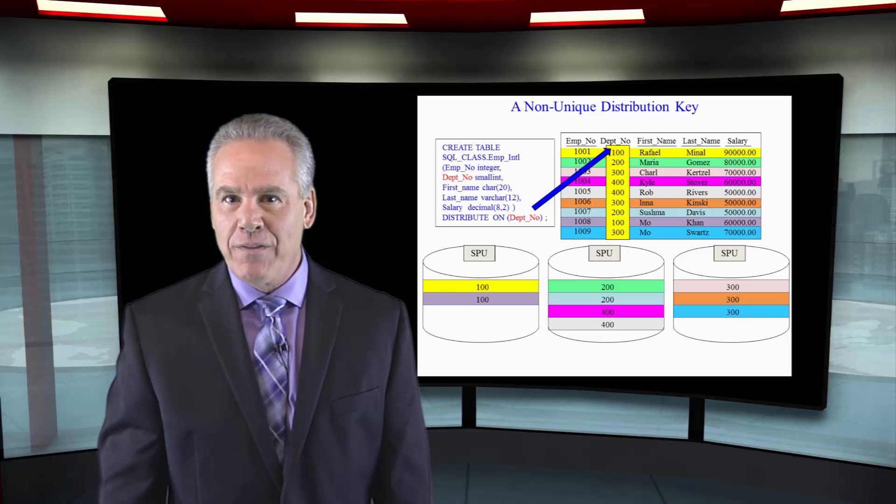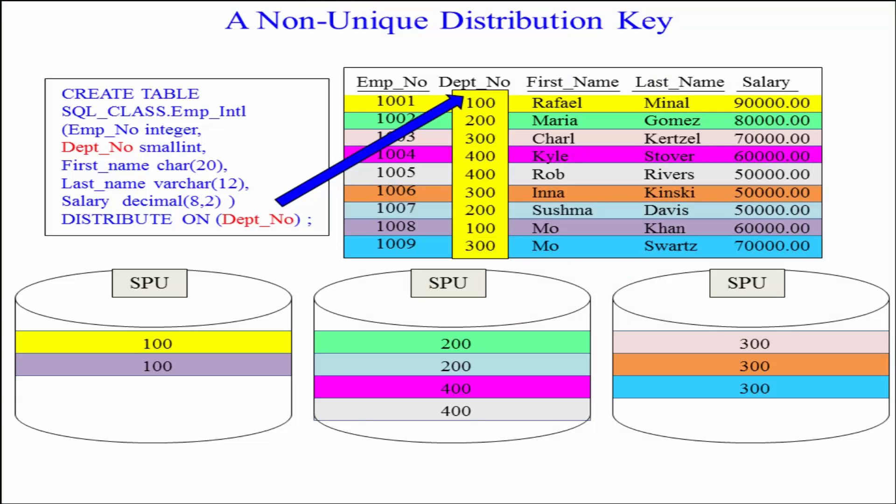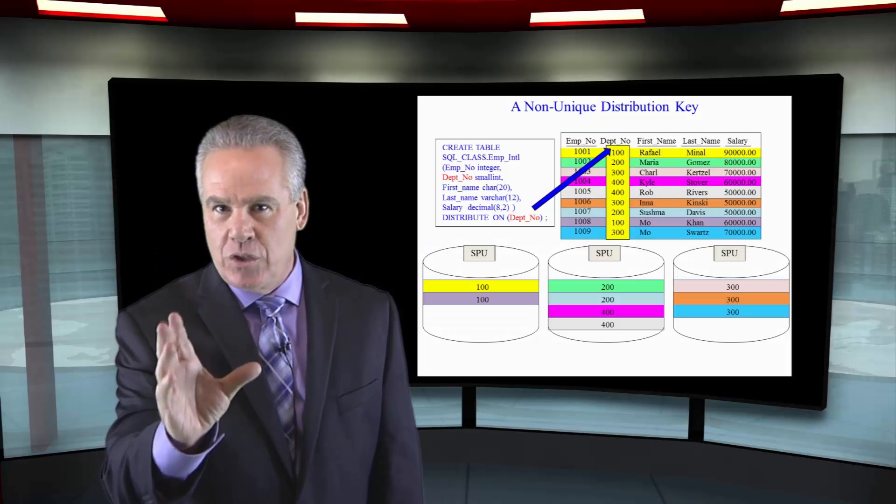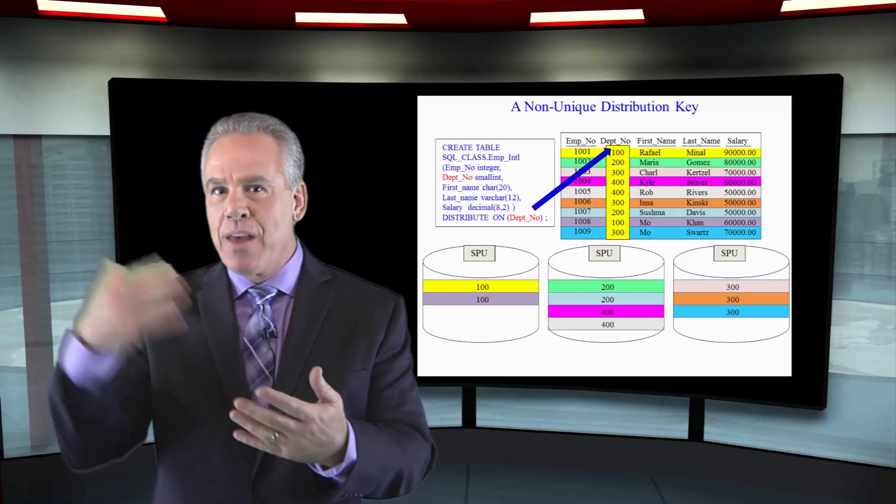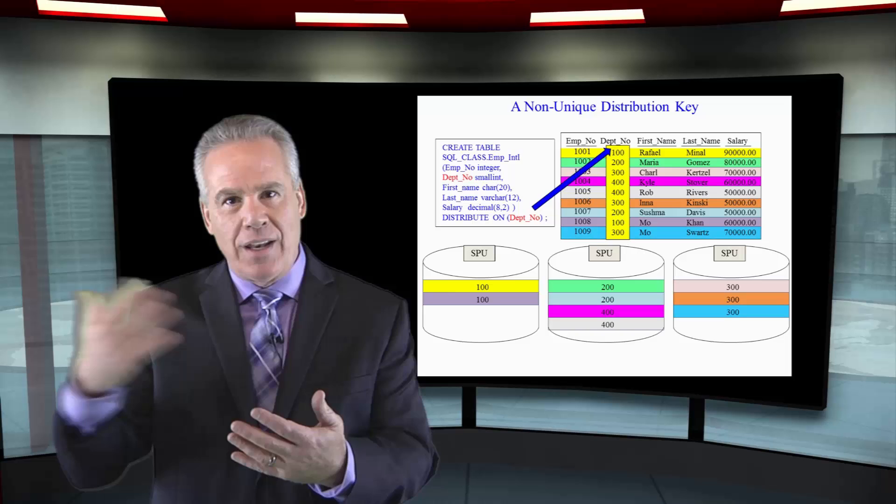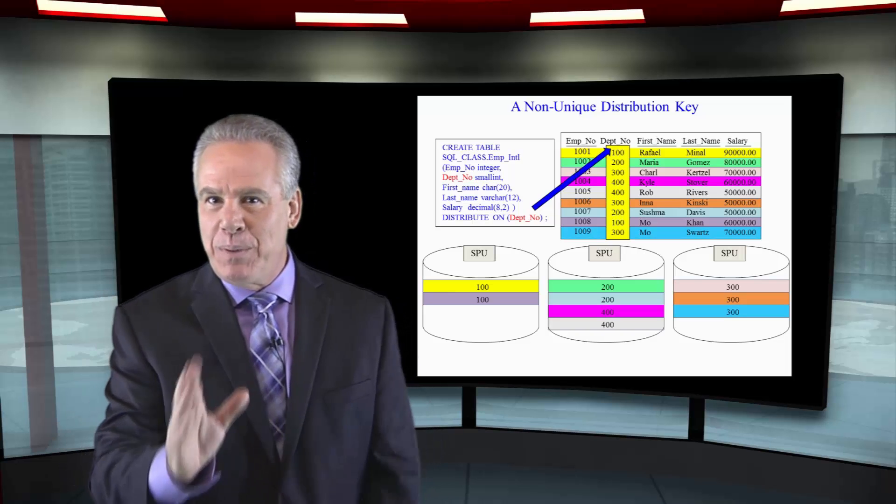All like values, like the 100s went to one SPU. The 300s went to another SPU. They're sticking together and that's also a very important design. You don't always have to get perfect distribution. You want good distribution, but you also want to pick a distribution key that people are querying on. That's going to really help speed things up.